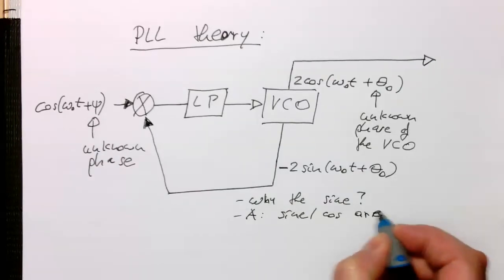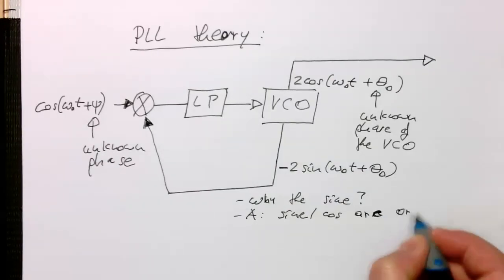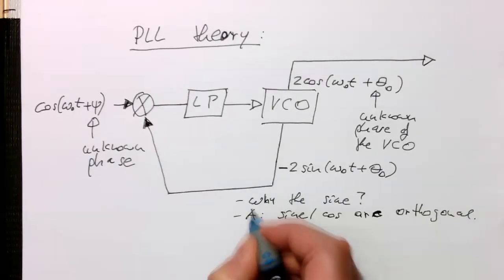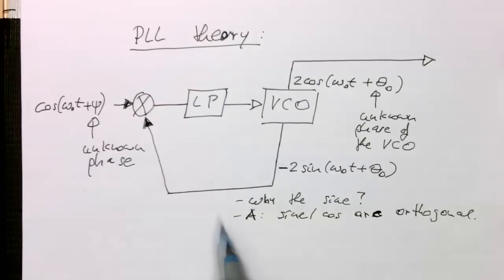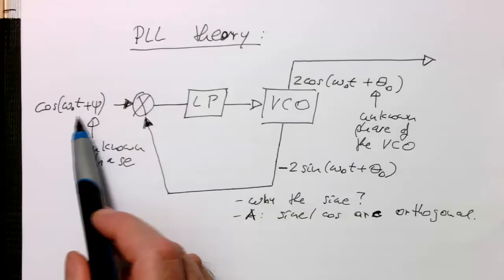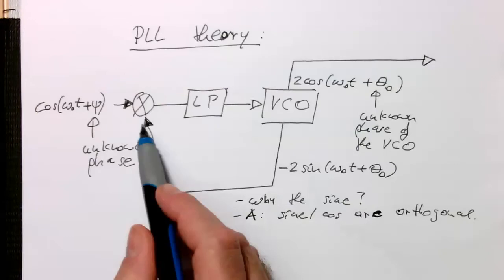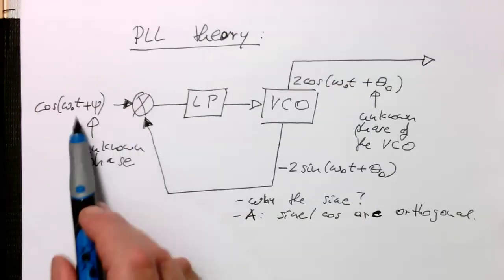So we directly see in the lock condition when this signal here and this cosine and this sine wave coming in here, so this pathway, if they are exactly the same phase,